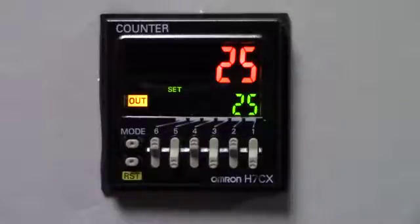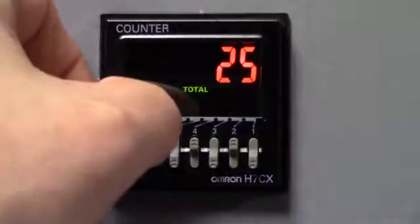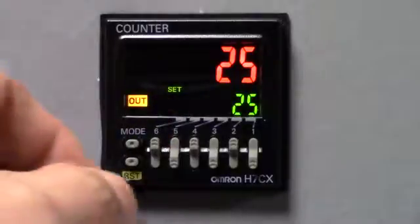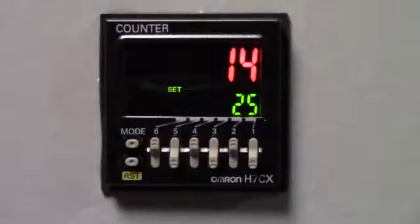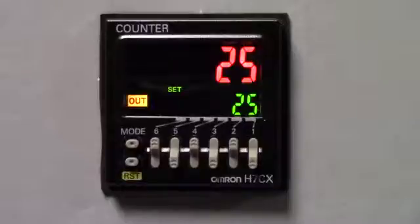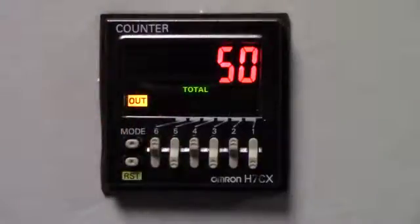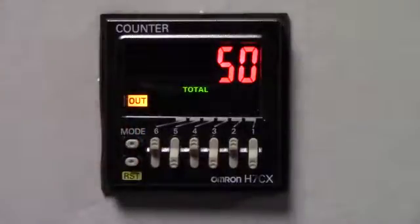And because we're doing a total and preset counter, we now press the mode key. It gives us a total of 25. We press the mode key again, and if we hit the reset key, or press the reset key, and we do another 25. The output light came on, and now we're going to press the mode key. As you can see, it is still keeping track of how many counts we have from a total perspective.